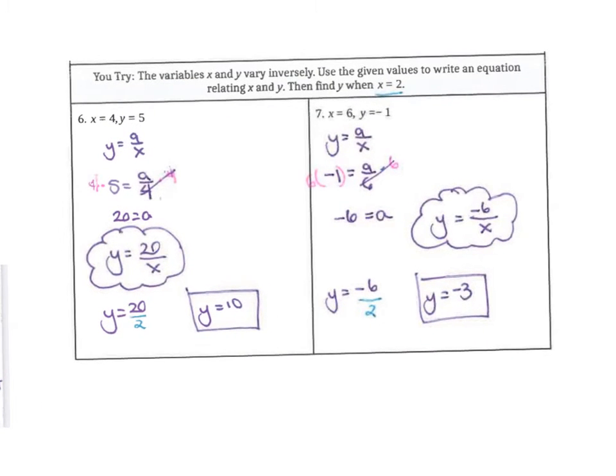So trying this out, you would find that number 6, a is 20. So you plug it into the equation, y equals 20 over x. Then when you plug in 2, you find y equals 10.